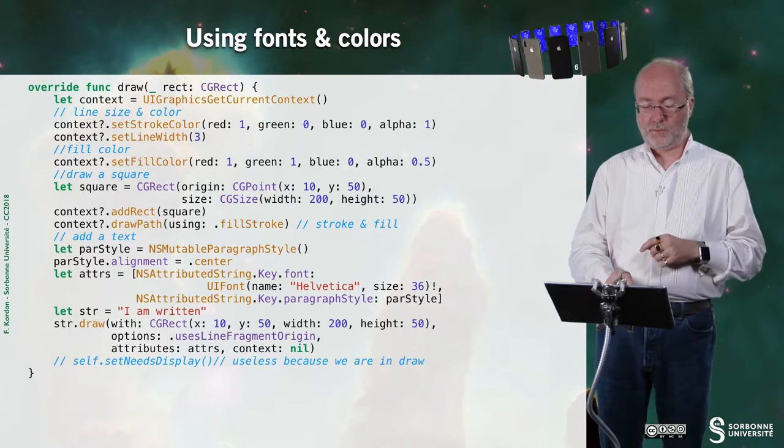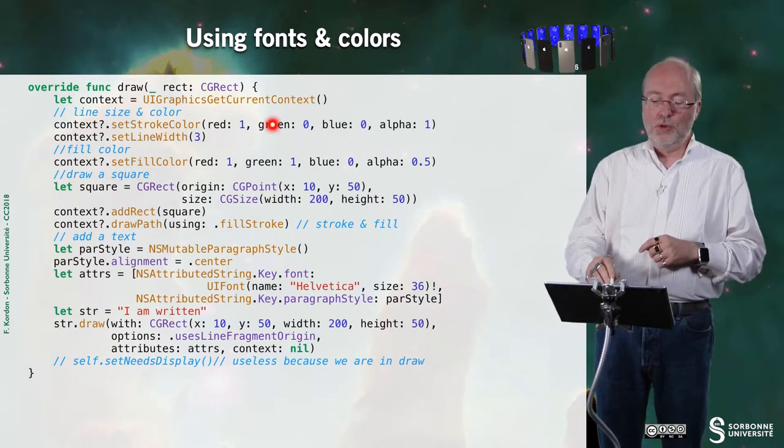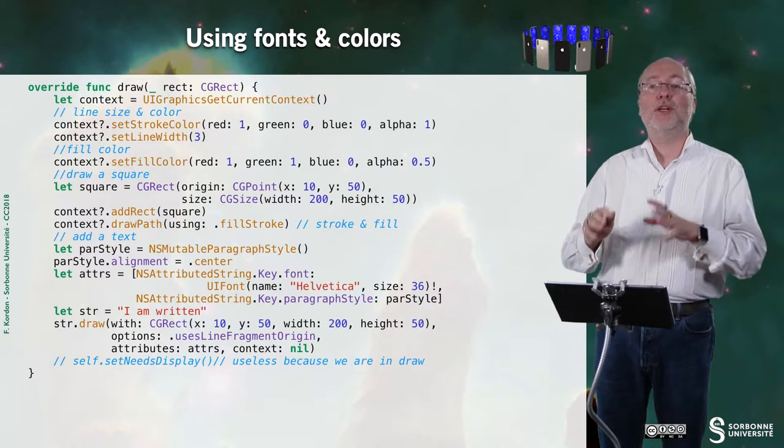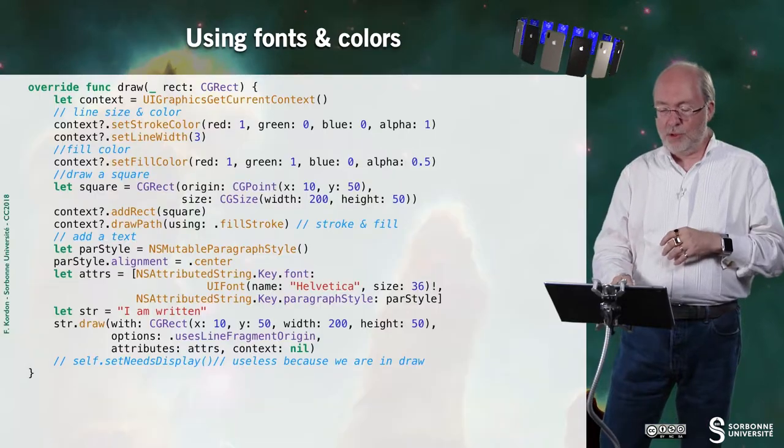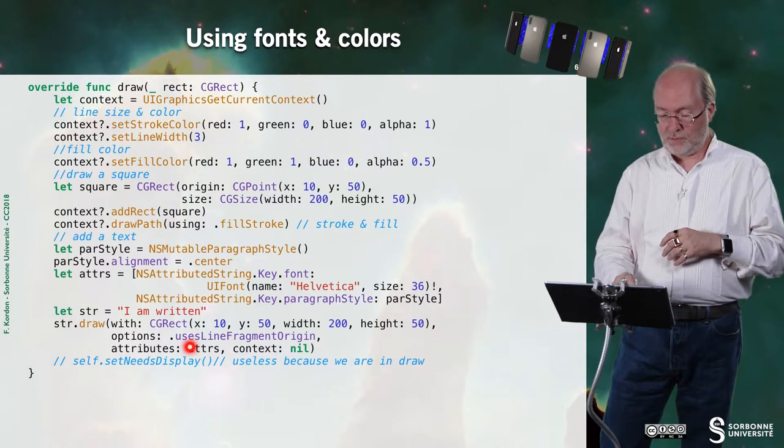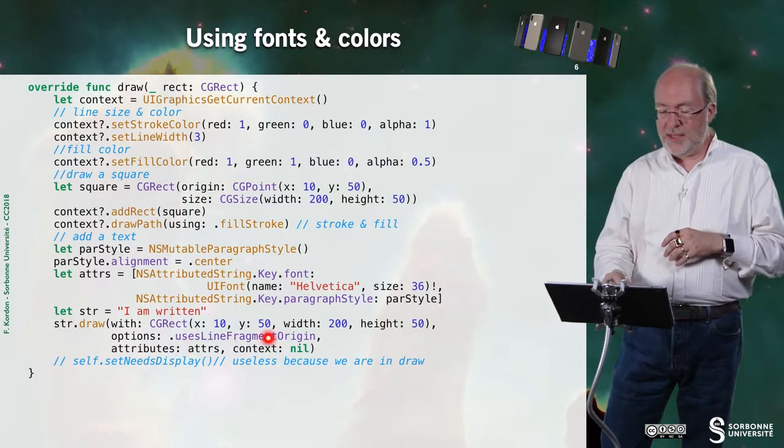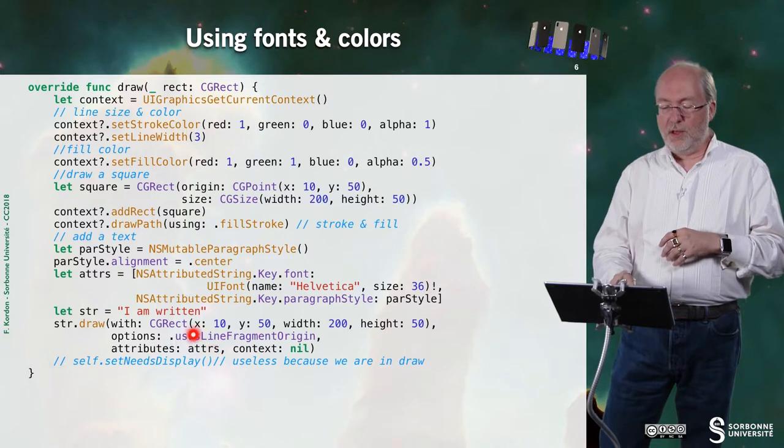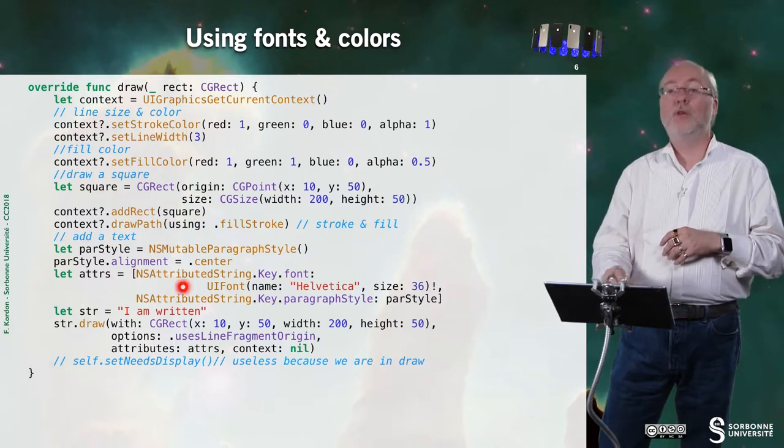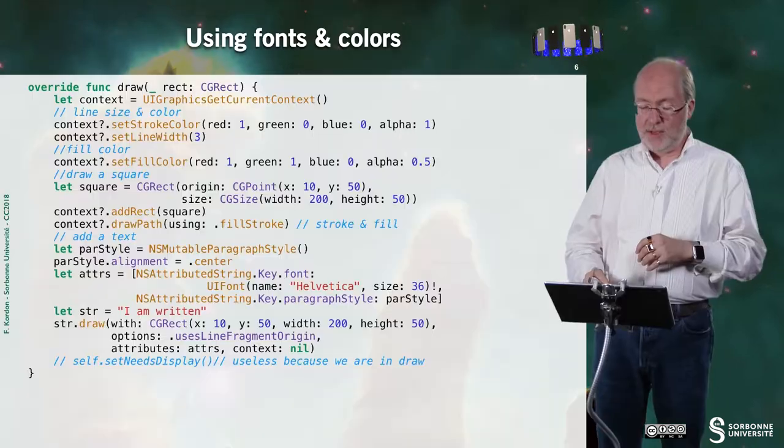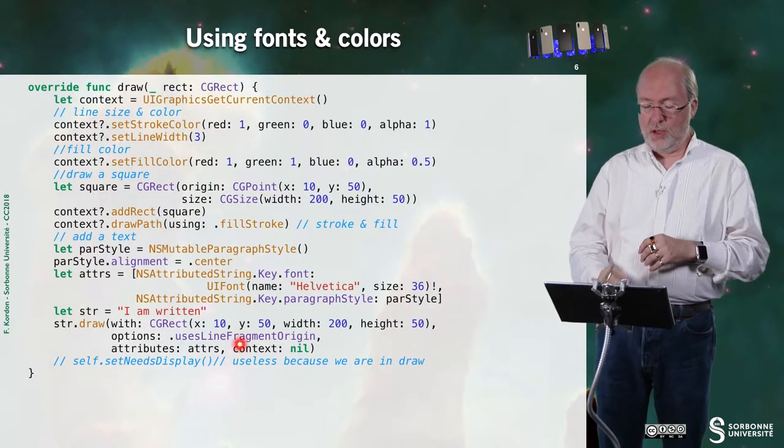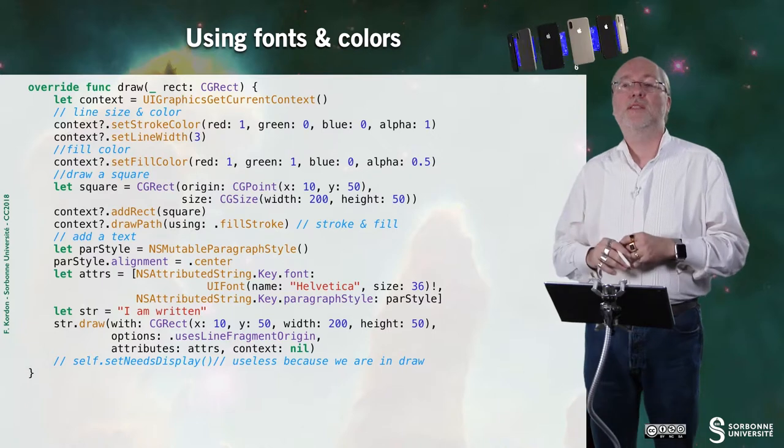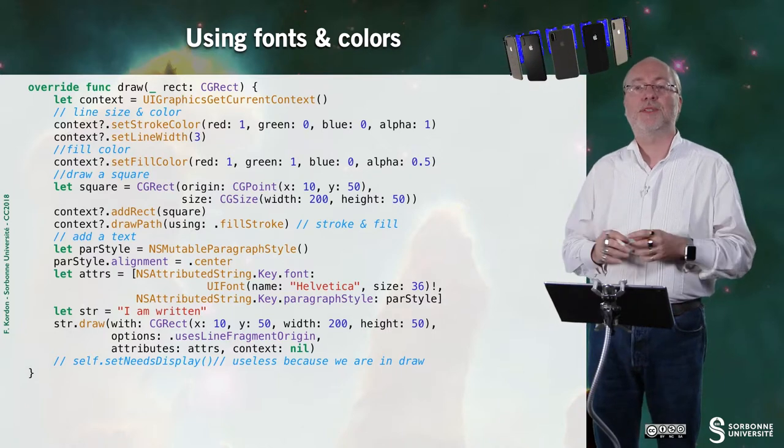I can then create a string with the text I want to be filled. And I request my environment to draw on a rectangle, which is the same as the one I already drawn, because I want my text to be inside this rectangle. And then I say I want to use these options, these attributes, the characteristic of the font and its size. And also the context, but here the context is just set to nil.